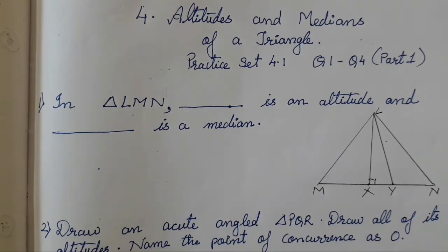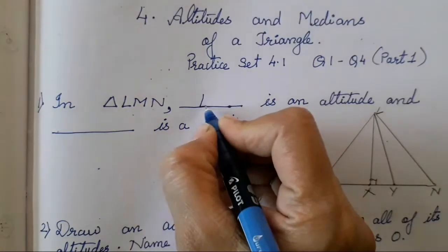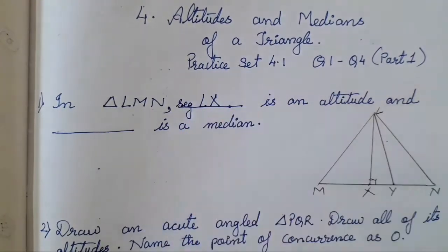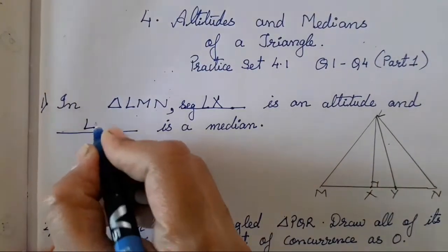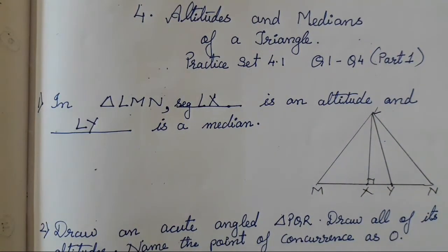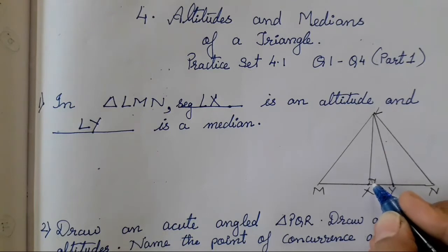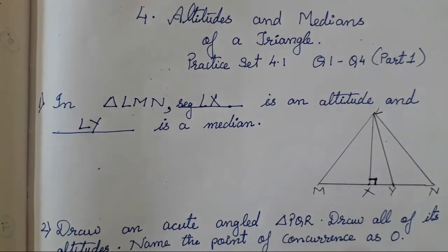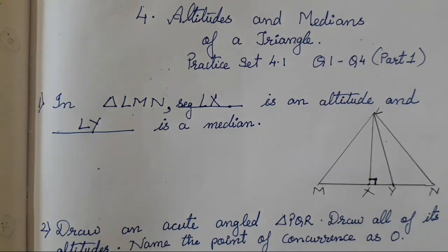Altitude and median we have already done last year - you all can watch that video, the link will be provided in the description box. In this diagram the altitude is going to be LX - you all can write segment LX. And the median is LY. Now I will show you a small trick: when we have to identify an altitude, it is going to show a 90 degree sign - that is going to be your altitude. Whereas in the median there is no such sign. Keep this trick in mind and it will be very easy for you all to find the altitude and median.